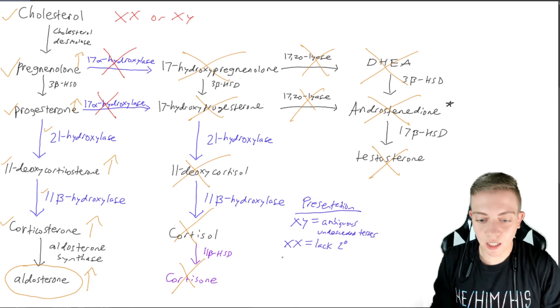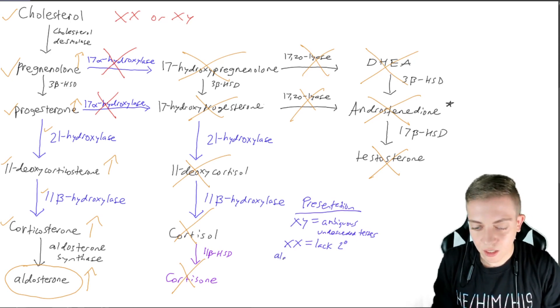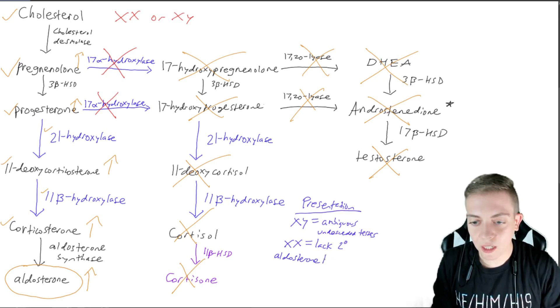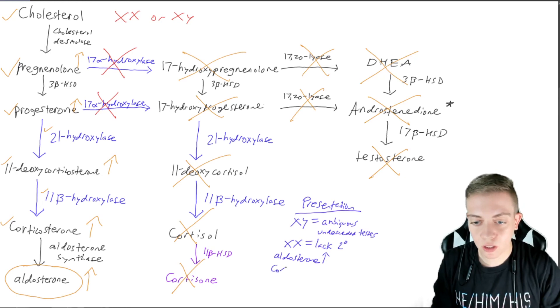And then just adding our other factors here. Our aldosterone level is going to be high, very high, because that's where all of our cortisol is being shunted to. We're going to have low cortisol. And we're going to have low androgens.